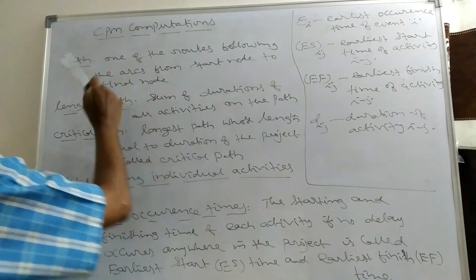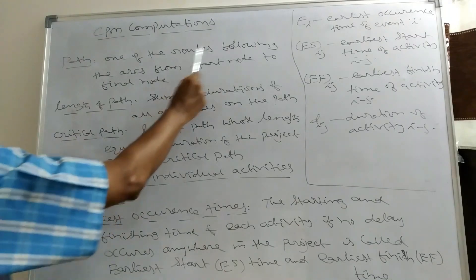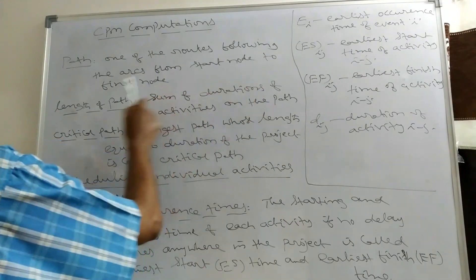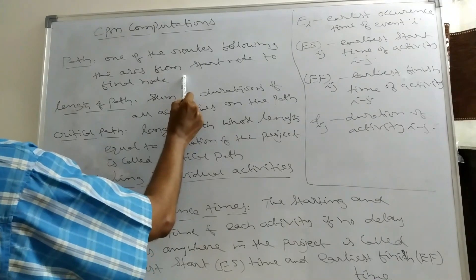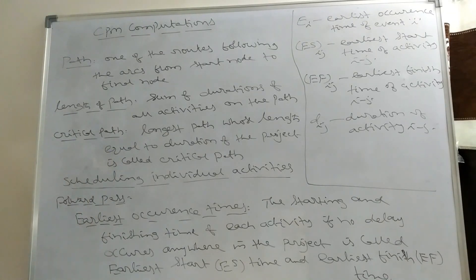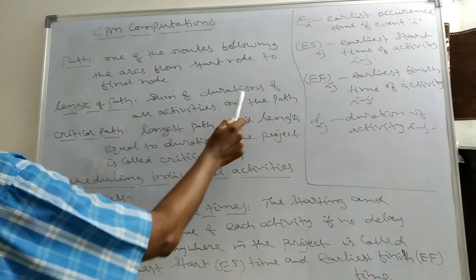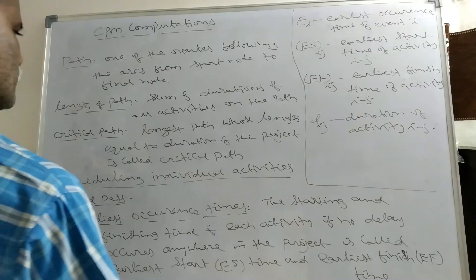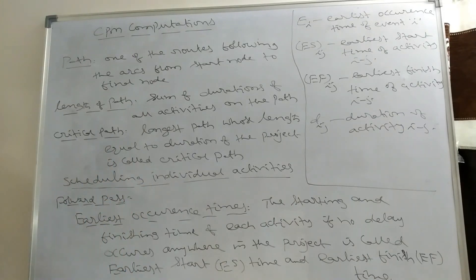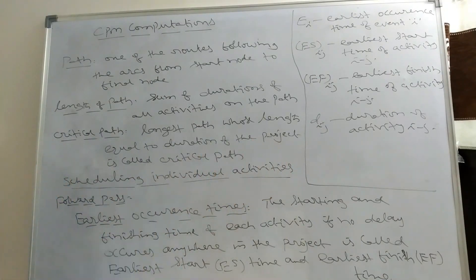Next: CPM computations. A path is one of the routes following some arcs from the start node to the final node. The length of a path is the sum of durations of all activities on that path. A critical path is the longest path, whose length equals the duration of the project.